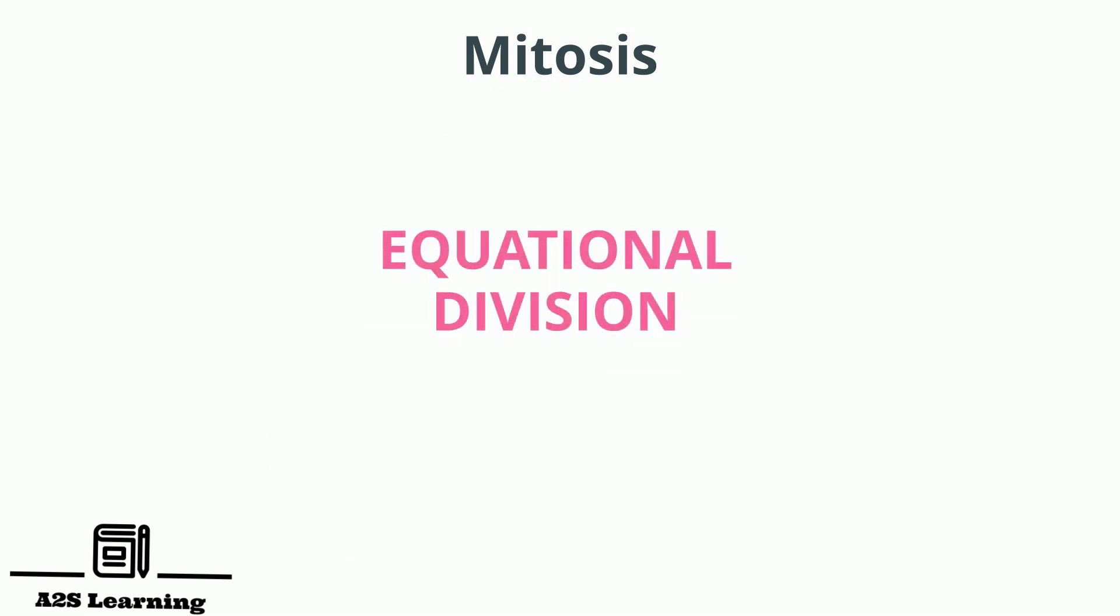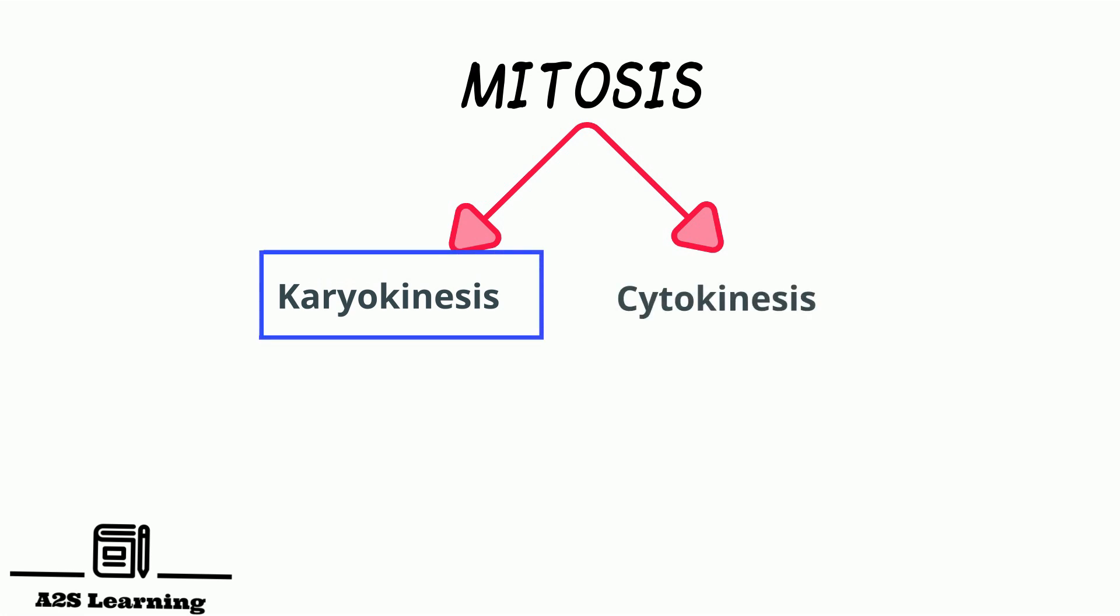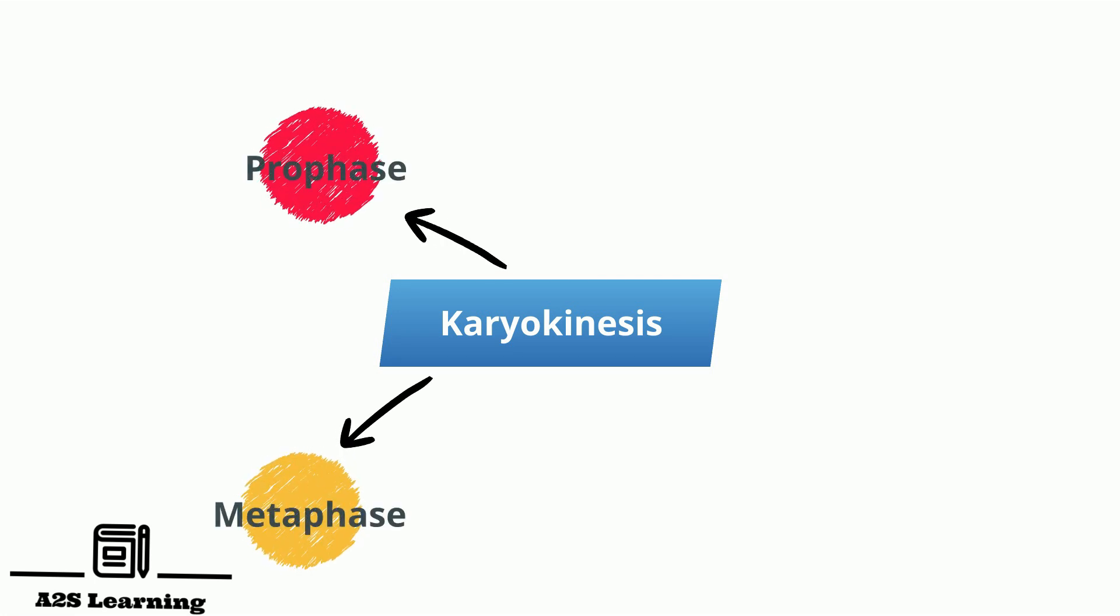For our convenience, mitosis is divided into two stages: karyokinesis and cytokinesis. Karyokinesis is the division of nucleus and cytokinesis is the division of cytoplasm. Karyokinesis involves four key stages: prophase, metaphase, anaphase and telophase.